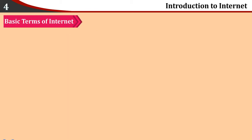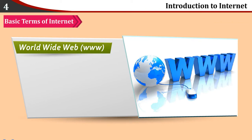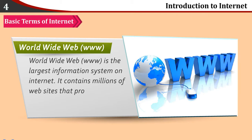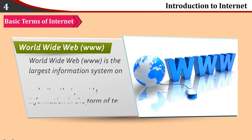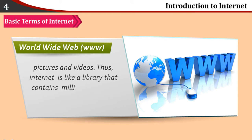Basic Terms of Internet — World Wide Web (WWW). World Wide Web is the largest information system on Internet. It consists of millions of websites that provide information in the form of text, animations, pictures and videos. Thus, Internet is like a library that contains millions of books.